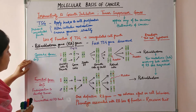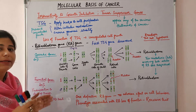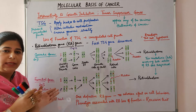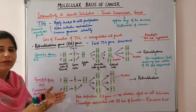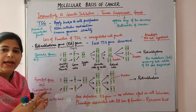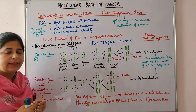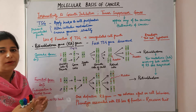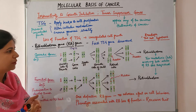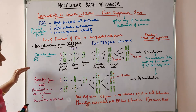60% of retinoblastomas occur sporadically. There is usually involvement of one eye and the individuals are not at increased risk of development of various other forms of cancers.